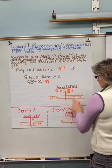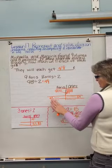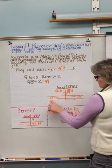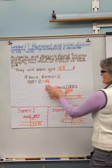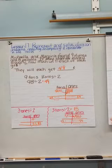Then I put them into groups. I wound up with my quotient as four tens, nine ones. So 98 divided by two is 49. They will each get 49 cents.